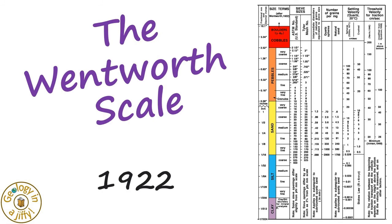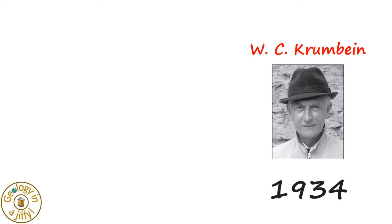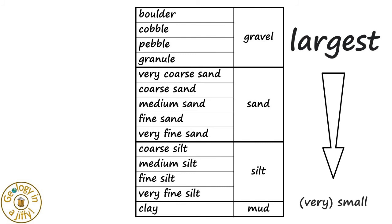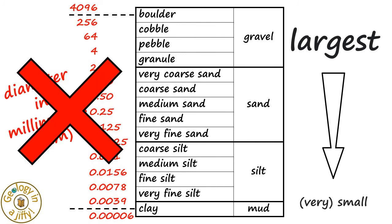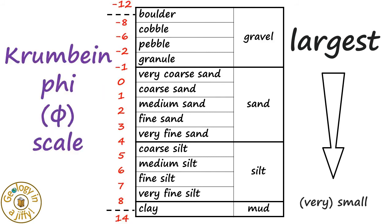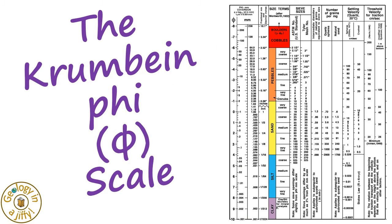Wentworth's 1922 Scale was then improved by W.C. Crumbrian in 1934, giving us his Crumbrian Phi Scale. Crumbrian used the Wentworth Scale, but instead of measuring and using the diameter of grains, he used the logarithmic scale, so expanding and improving the original 1922 Wentworth Scale.